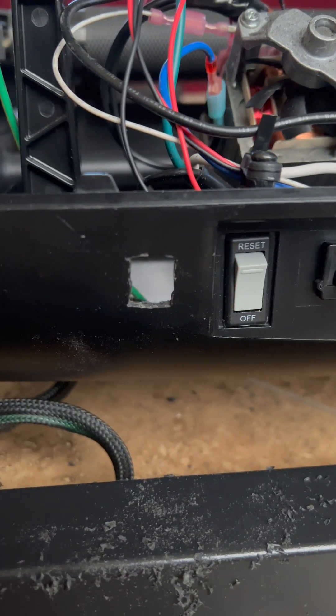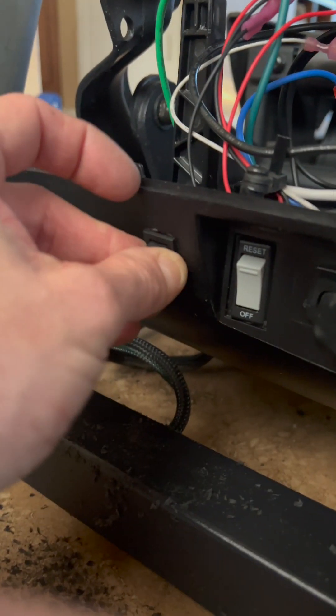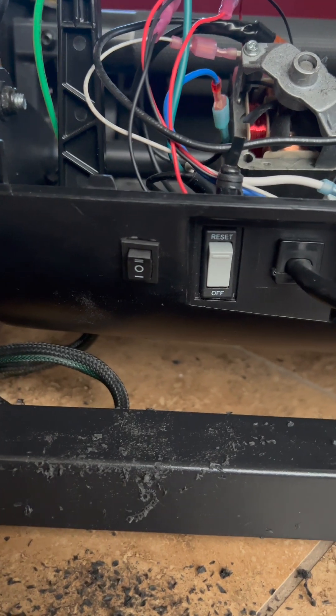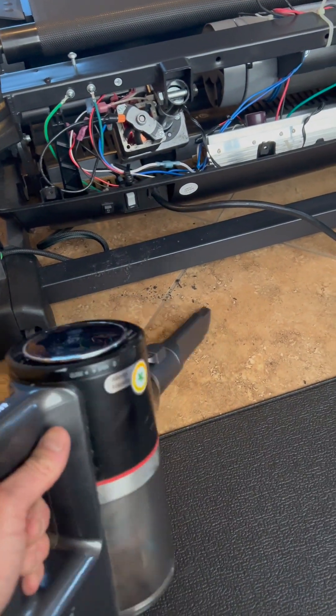I decided to add the new incline power switch right here next to the factory ON-OFF switch. We don't use incline function much so we decided this was the best place to install it.